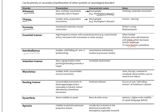Hemiballismus is sudden, wild flailing of one arm and one leg ipsilaterally — on the same side. This relates to problems in the contralateral hemisphere in the thalamus, usually lacunar strokes in the subthalamic nuclei, contralateral to where the hemiballismus is occurring.